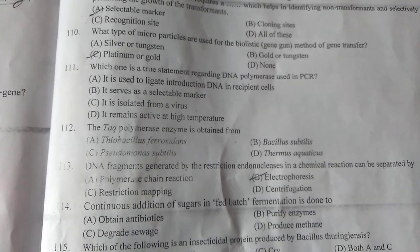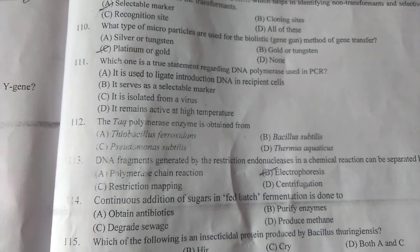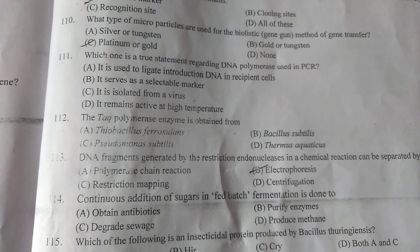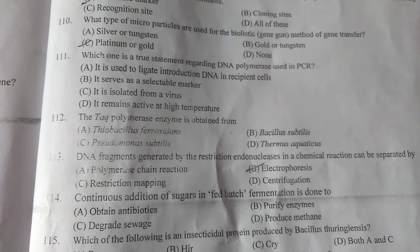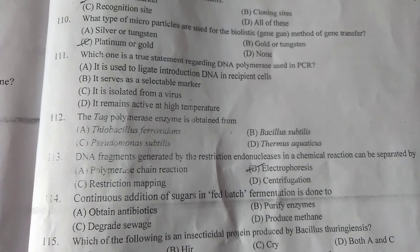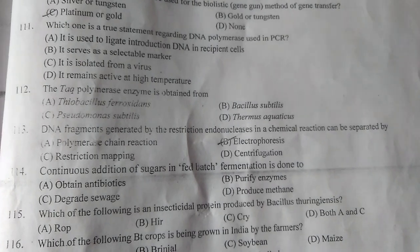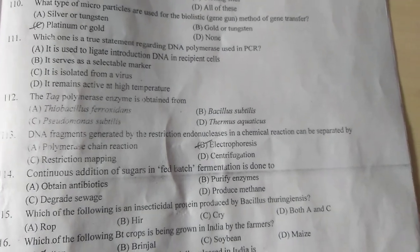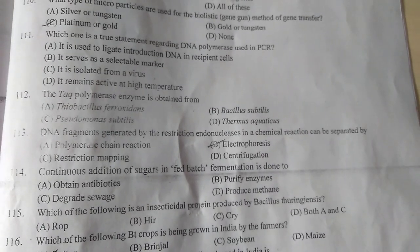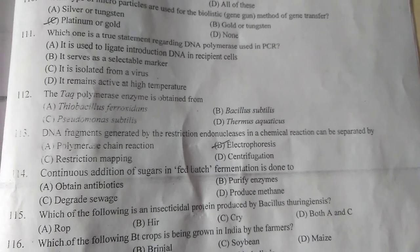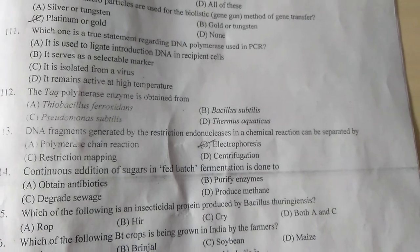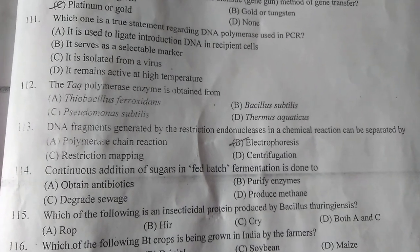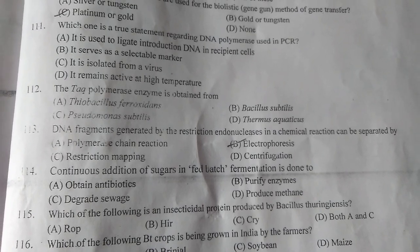Question number 112: The Taq polymerase enzyme is obtained from — D is the correct answer — Thermus aquaticus. Question number 113: DNA fragments generated by the restriction endonuclease in a chemical reaction can be separated by — B is the correct answer — electrophoresis.